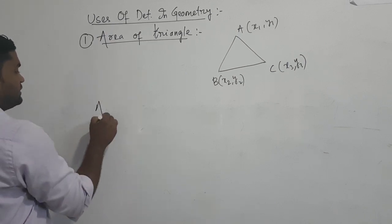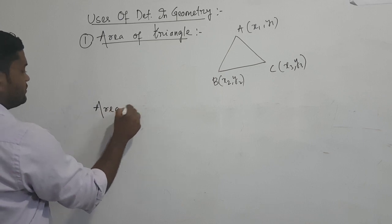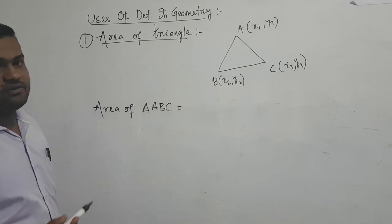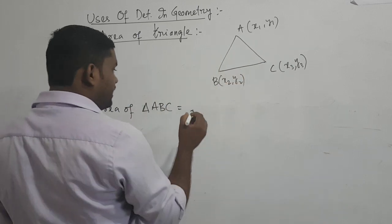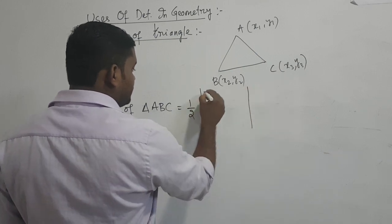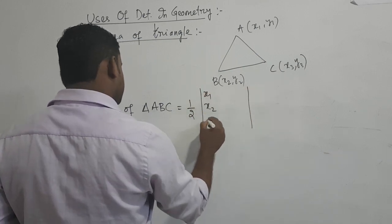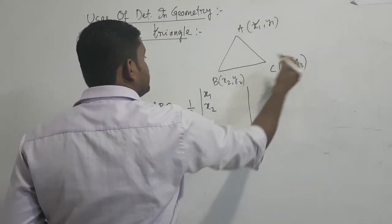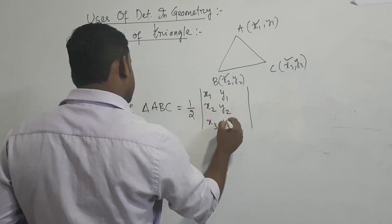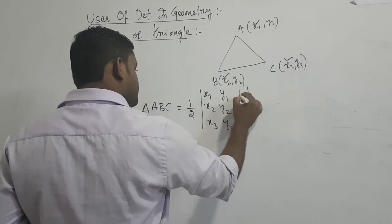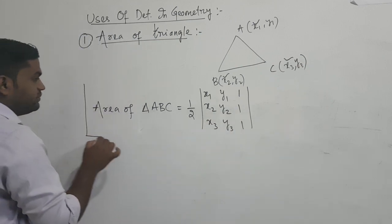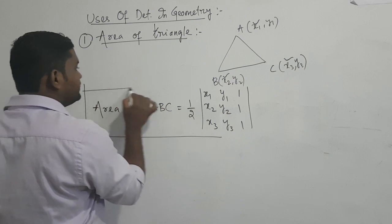Then the area of triangle ABC is given by half of the determinant whose first column is x1, x2, x3 (the x-coordinates of the vertices), second column is y1, y2, y3 (the y-coordinates), and the last column is 1, 1, 1. This is the area of triangle ABC in determinant form.